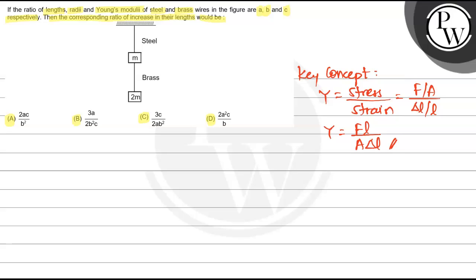In the question, all these things are given separately. The length ratio: length of steel to brass, Ls by Lb, is given as a.